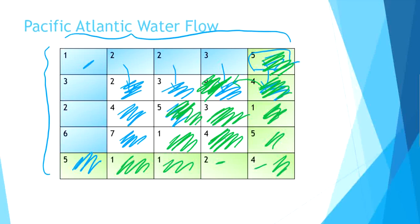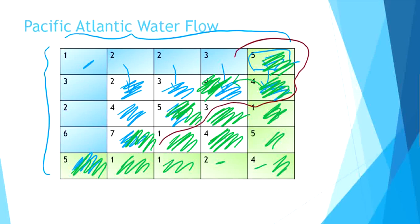From 5 it cannot flow to 4 or 3, so it stops at 5. From 1 it can flow to 7, but from 7 it cannot flow to 6 or 4 because it cannot flow to lower cells. So 7 is another common cell. The Atlantic Ocean will not pass further because the other cells' heights are smaller. The cells marked with both blue and green are the cells which can contain both Pacific and Atlantic waters, and these are the coordinates we have to pass as output.